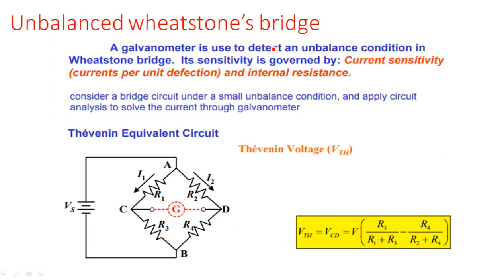Now when the bridge is in unbalanced condition, our task is to take the Thevenin's equivalent circuit. By calculating the Thevenin's equivalent voltage and Thevenin's equivalent resistance, we can calculate the current flowing through the galvanometer. I am going to explain how to calculate Vth and Rth step by step.